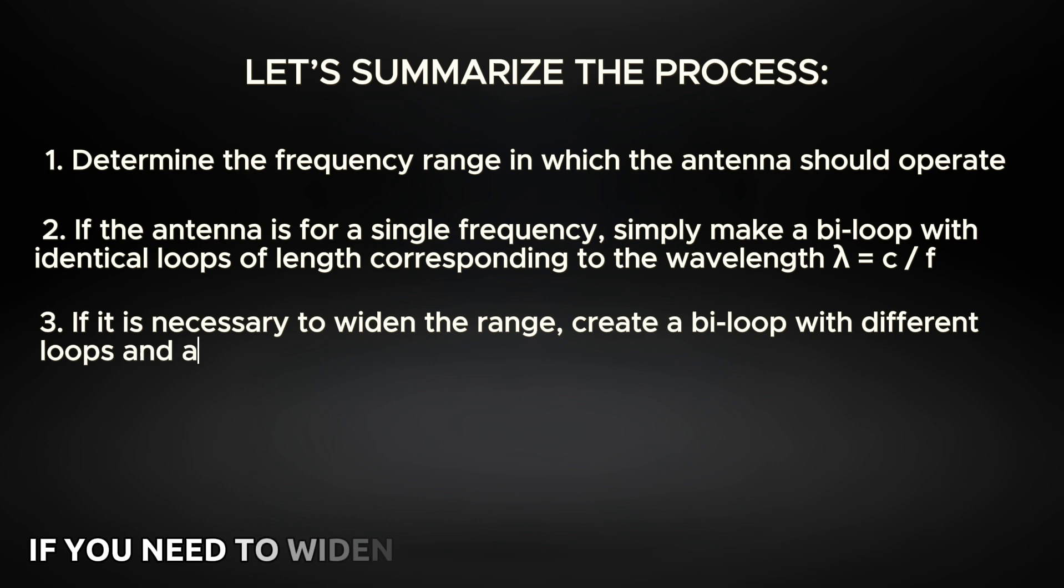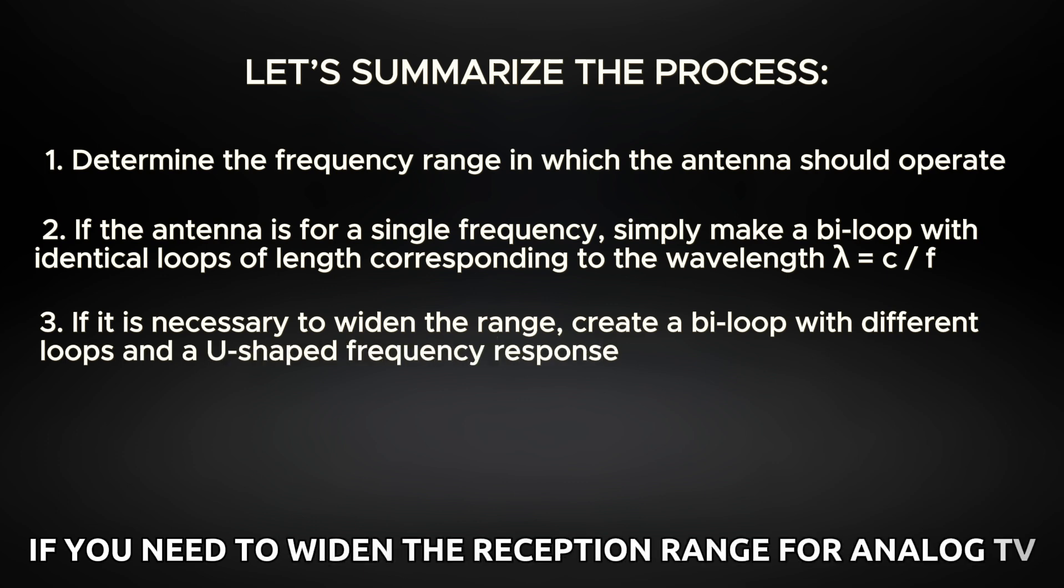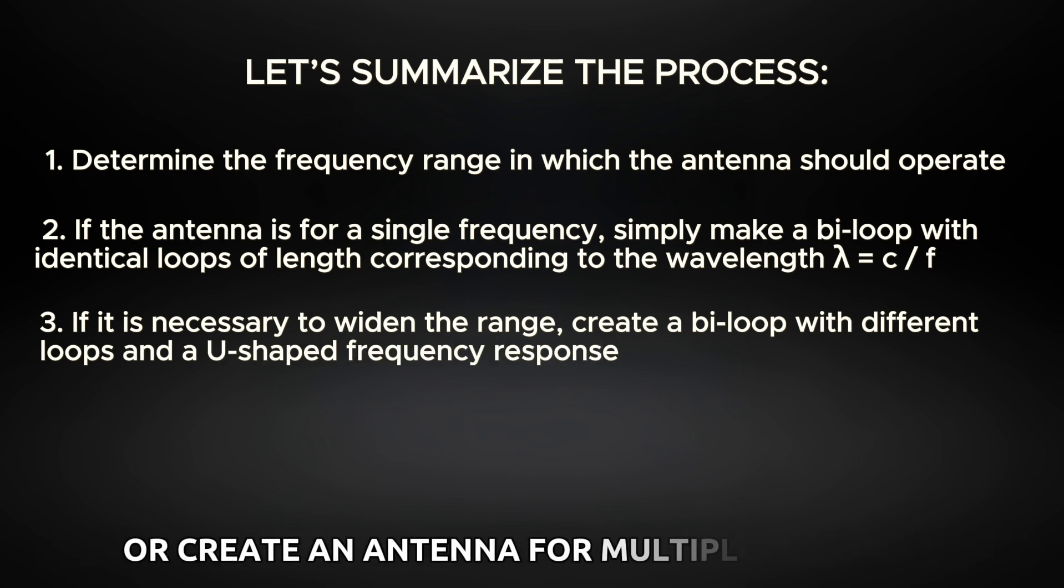If you need to widen the reception range for analog TV or create an antenna for multiple digital TV frequencies, make loops of different sizes according to their wavelengths. The result is a bi-loop with a U-shaped frequency response. Such an antenna does not require matching devices and can be connected directly to the cable and TV input.